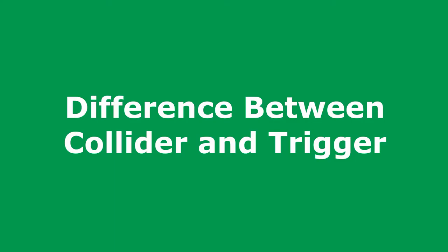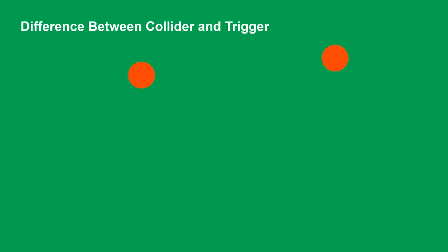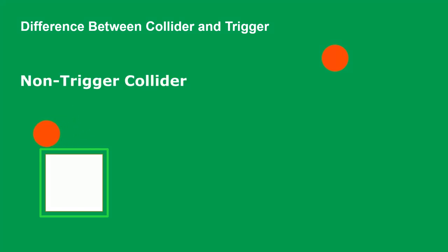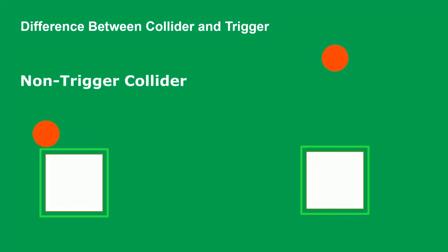Before getting into the deep dive, I'd like to explain the difference between a collider and a trigger. We have two balls and a cube having a collider on the left side, and a cube having a trigger collider on the right side. A trigger is a kind of collider, but it doesn't affect the body physically — it affects it programmatically, meaning it will call back a function when a certain collider intersects with that trigger.